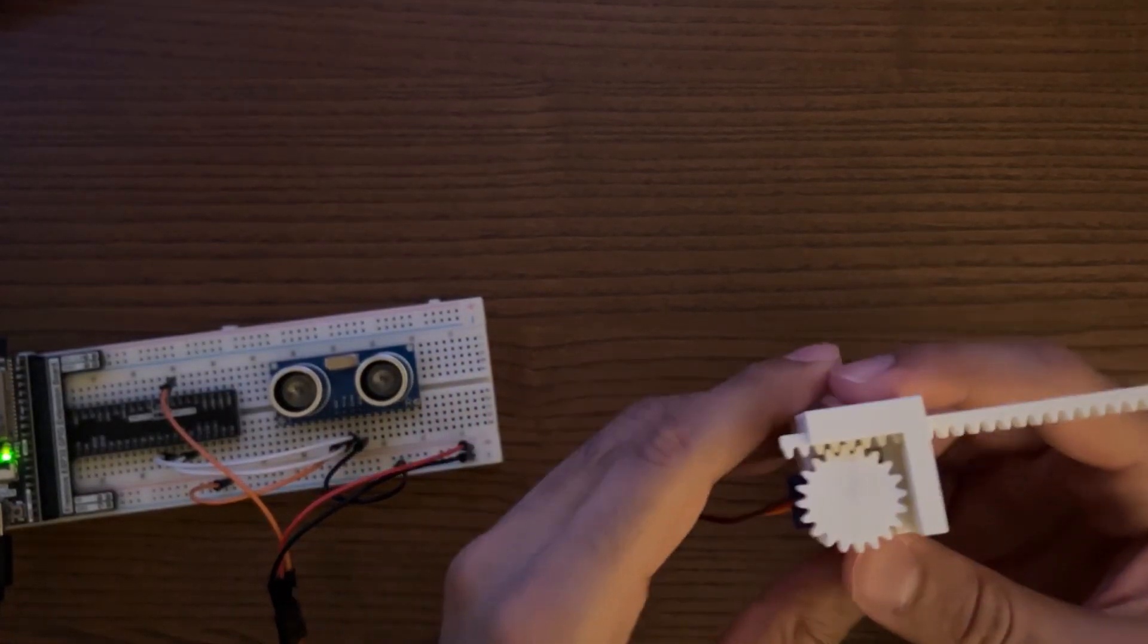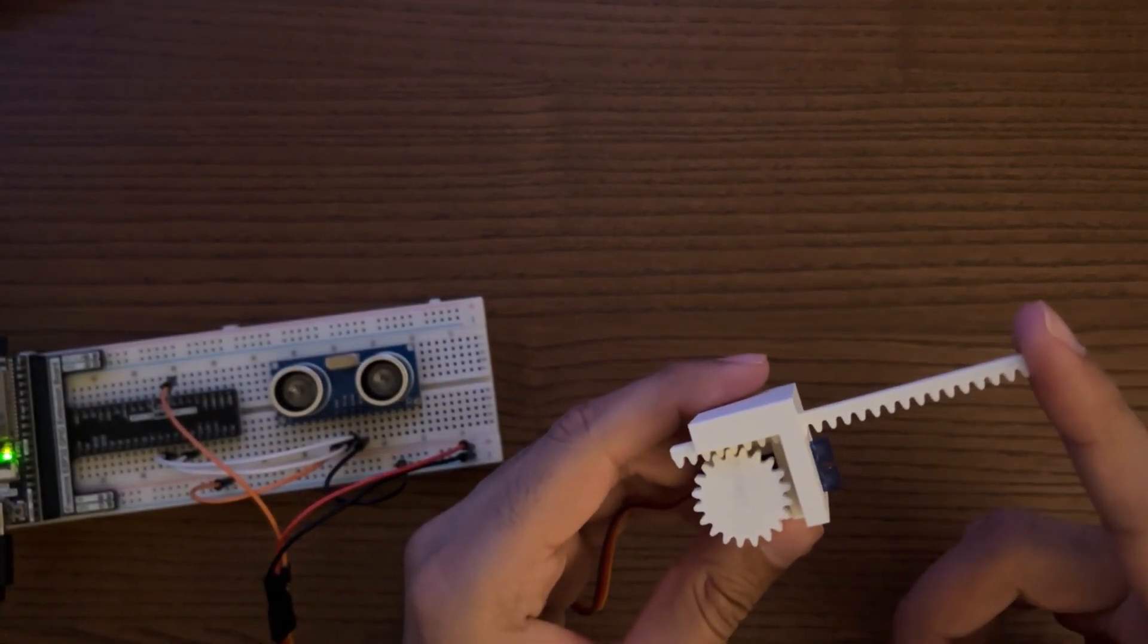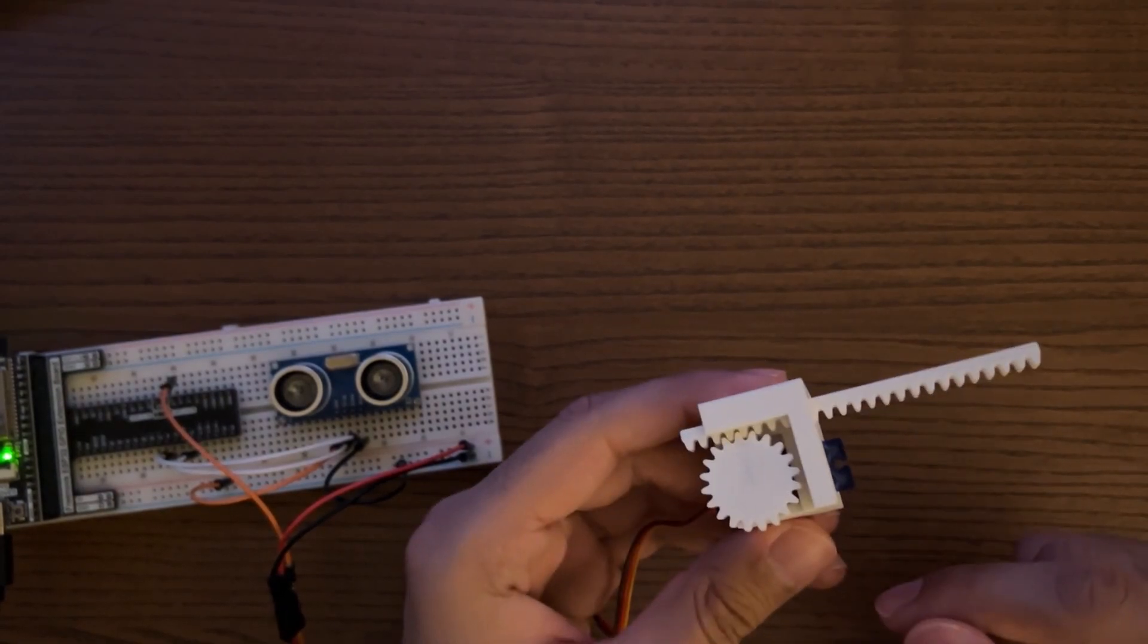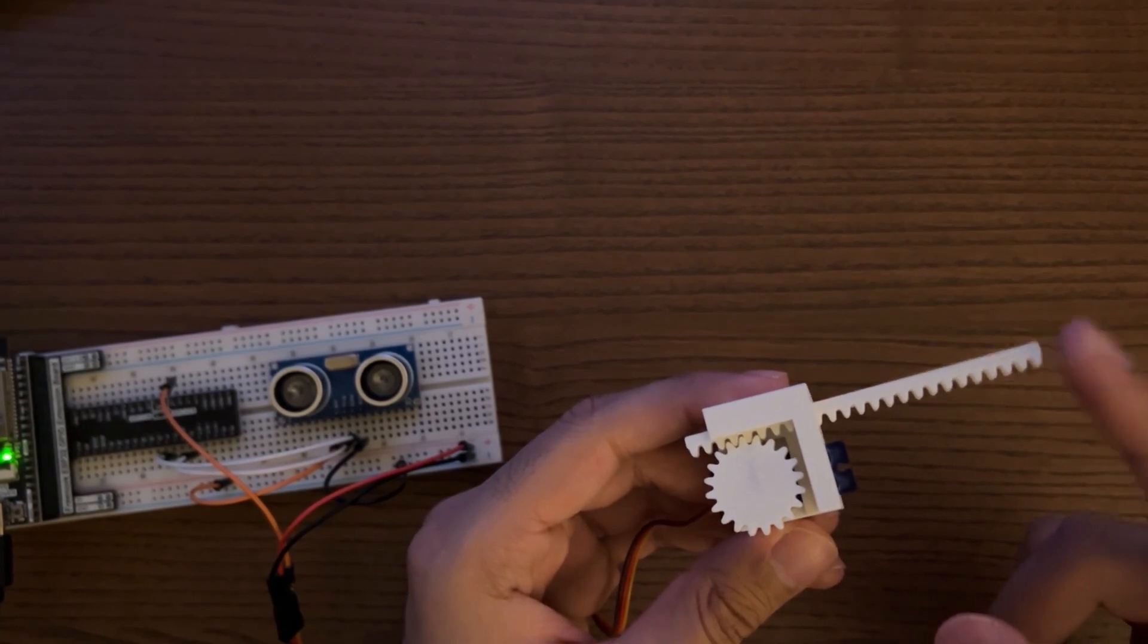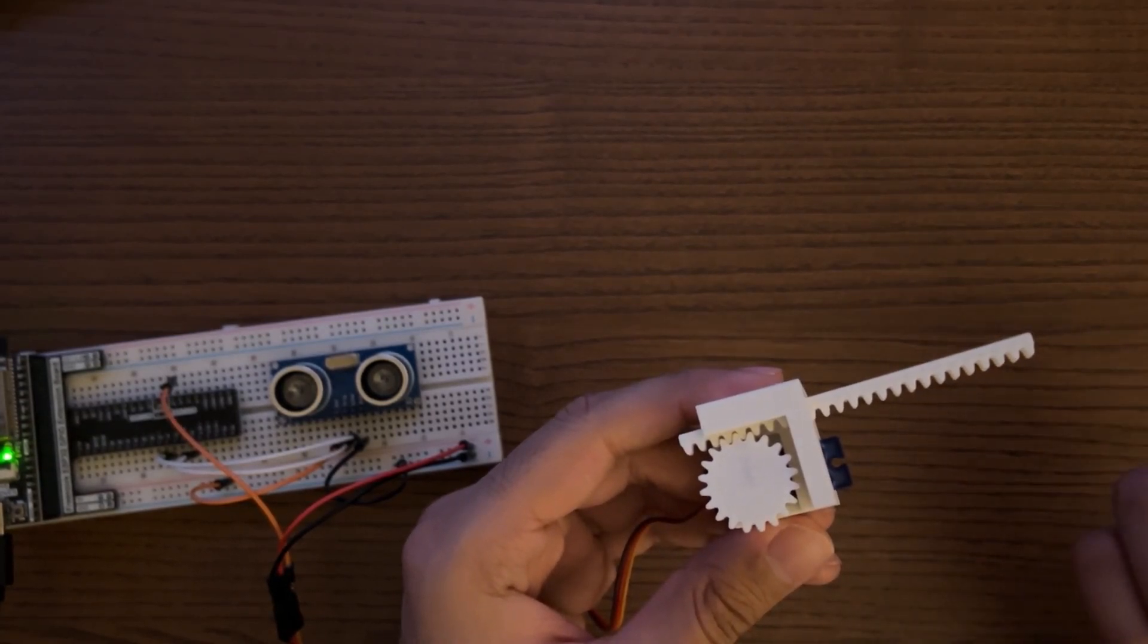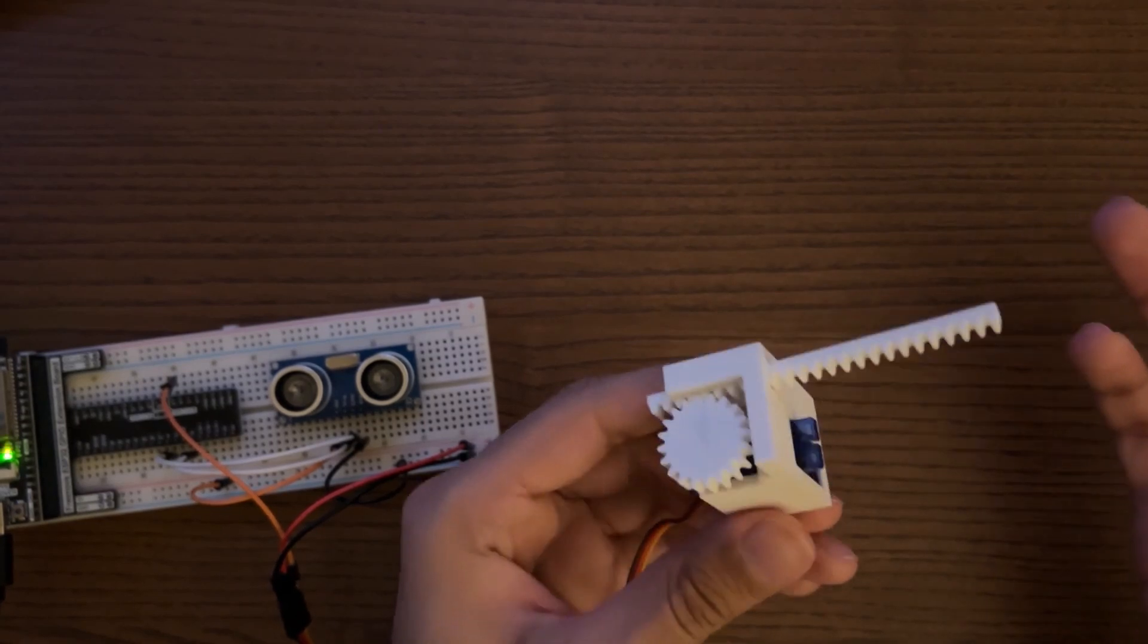Now the distance that the gear can move the rack depends on the radius of the gear. In this case, I have the radius as 10 millimeters, so it's going to be r times pi, so 10 times pi—around 30 millimeters or 3 centimeters.